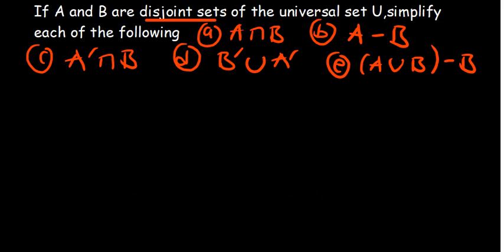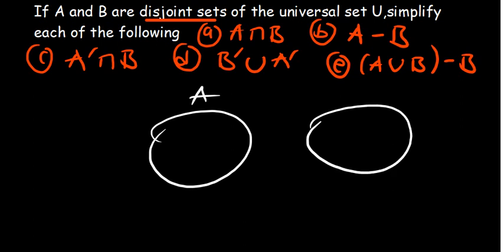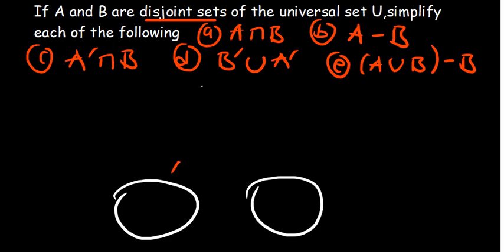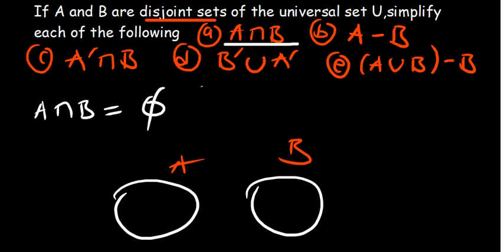Now for the last question, which involves disjoint sets. When we say two sets A and B are disjoint, it means these sets do not intersect. We'll work around that to simplify these sets. So I draw A and B as disjoint sets. Looking at the first part: A intersection B — is there any region where these sets intersect? Absolutely not. Therefore, A intersection B is an empty set.